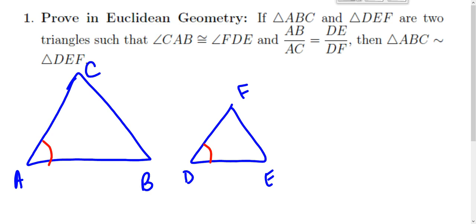We're going to find a point B prime such that DE is congruent to AB prime. So choose B prime...